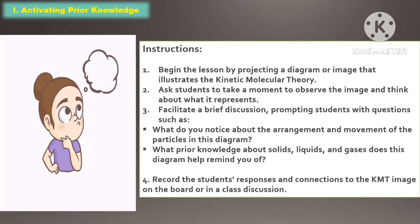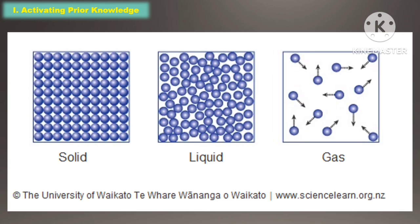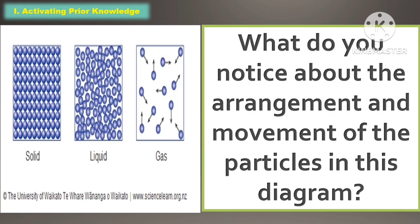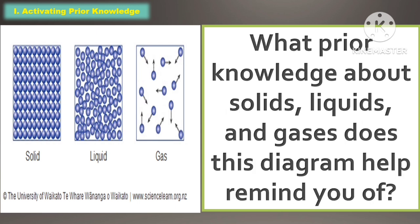When creating prior knowledge, begin the lesson by projecting a diagram or image that illustrates the kinetic molecular theory. Ask the students to take a moment to observe the image and think about what it represents. Facilitate a brief discussion, prompting students with questions such as: What do you notice about the arrangement and movement of the particles in this diagram? And what prior knowledge about solid, liquid, and gases does this diagram help remind you of?